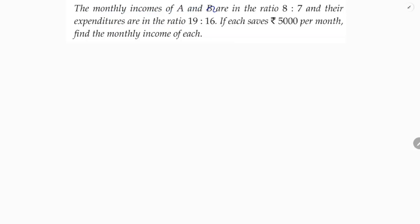The monthly incomes of A and B are in the ratio 8:7 and their expenditures are in the ratio 19:16. If each saves rupees 5000 per month, find the monthly income of each.